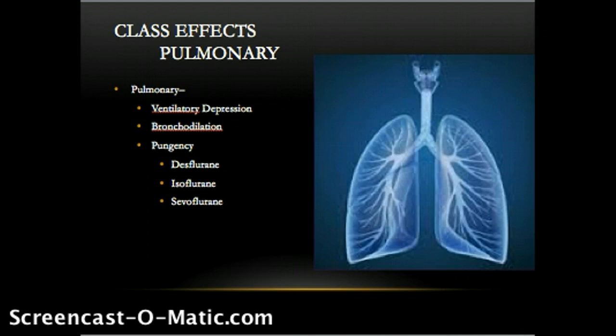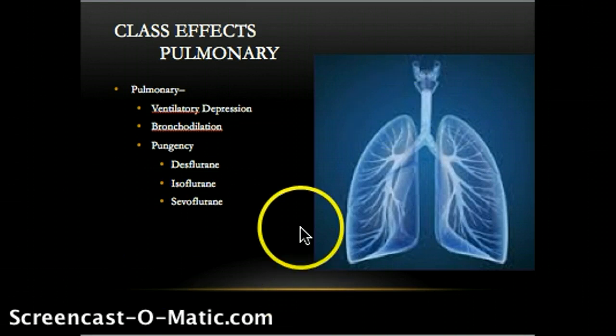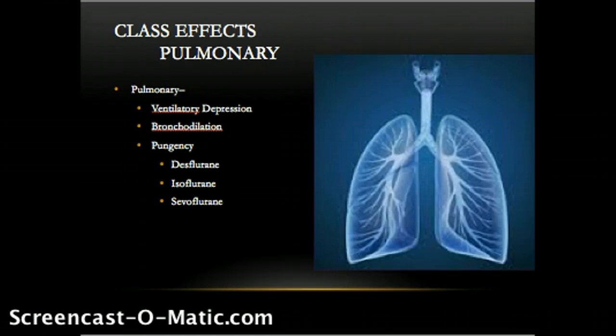Respiratory muscular suppression is also responsible for increased airway patency. It is well known that volatile anesthetics cause bronchodilation. This may not be readily apparent under normal circumstances, as airway tone is normally very low. However, during bronchospasm or bronchoconstriction, this effect is readily apparent.